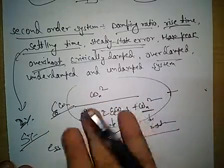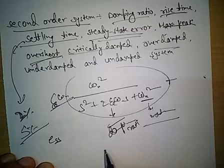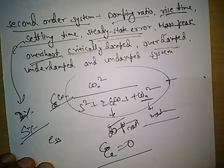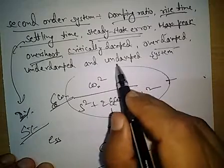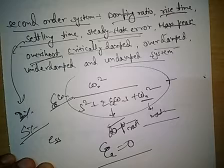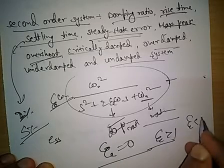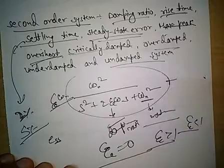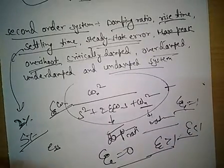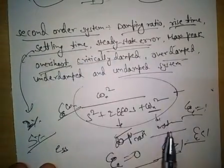Another important concept is identifying whether a transfer function is critically damped, overdamped, or underdamped. Depending on the value of ζ: if ζ = 0, it is undamped; if ζ > 1, it is overdamped; if ζ < 1, it is underdamped; and if ζ = 1, it is critically damped. We must learn and practice questions related to these topics in the second order system.